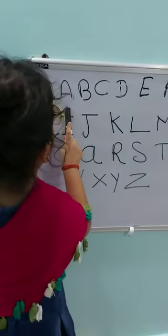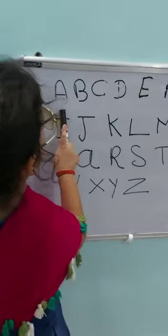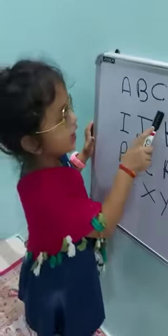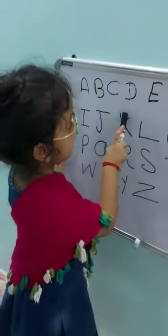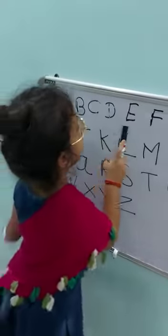A is Apple, B is for Wall, C is for Tad, D is for Doll.